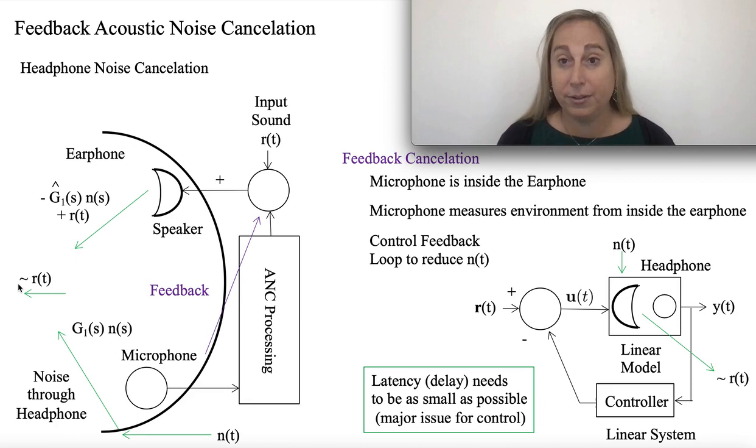The problem is the environment is here, and the environment definitely wants to go through this device. Now it'll have some transfer function that'll be G1 of s as it goes through. So now the question becomes, well, how do I approach this?